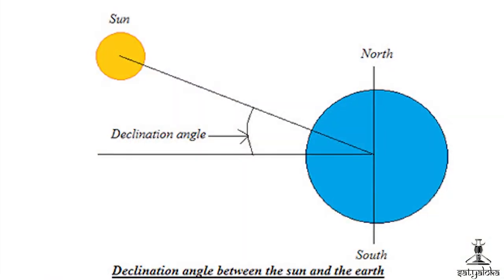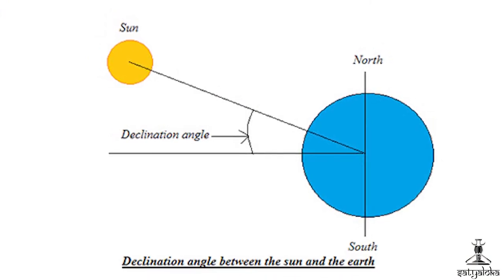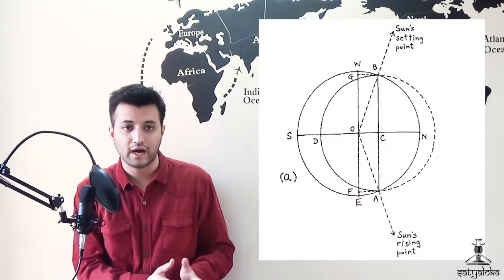In verse 28 of chapter 2, it is stated: the sine of the greatest declination is 1397. The greatest declination is another way of stating the obliquity of the Earth's axis. The value 1397 is what is known as an R-sine — the sine of the angle of declination of the Sun multiplied by the standard Indian radius of 3438. To get the obliquity in degrees, we take the inverse sine of the ratio 1397 divided by 3438, obtaining 23.975182 degrees.